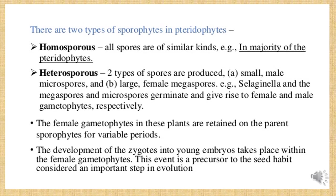In pteridophytes, sporophytes are of two types. The first is homosporous — homo means same — where all spores are of similar type, and this is found in the majority of pteridophytes. The second type is heterosporous — hetero means different — where there are two different types of spores: the small male microspore and the large female megaspore. Example: Selaginella.